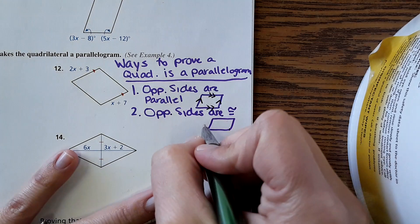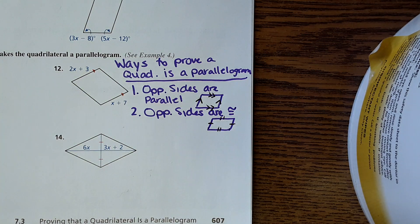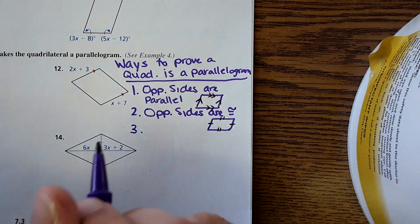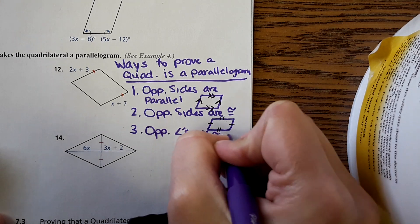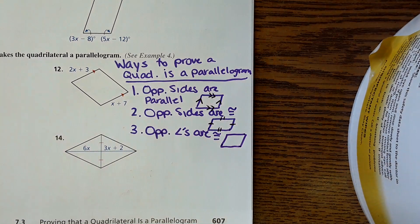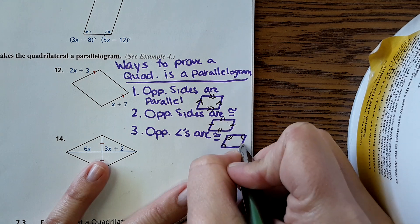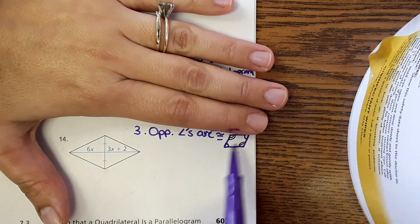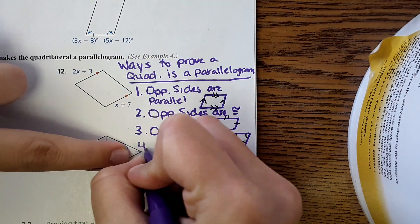Number two: opposite sides are congruent — and of course it has to be both pairs, so this side would have to equal this one and this would have to equal this one. Number three: opposite angles are congruent — both pairs of angles. This angle being equal to this one, and this angle equal to this one. Each one of these can be used independently.